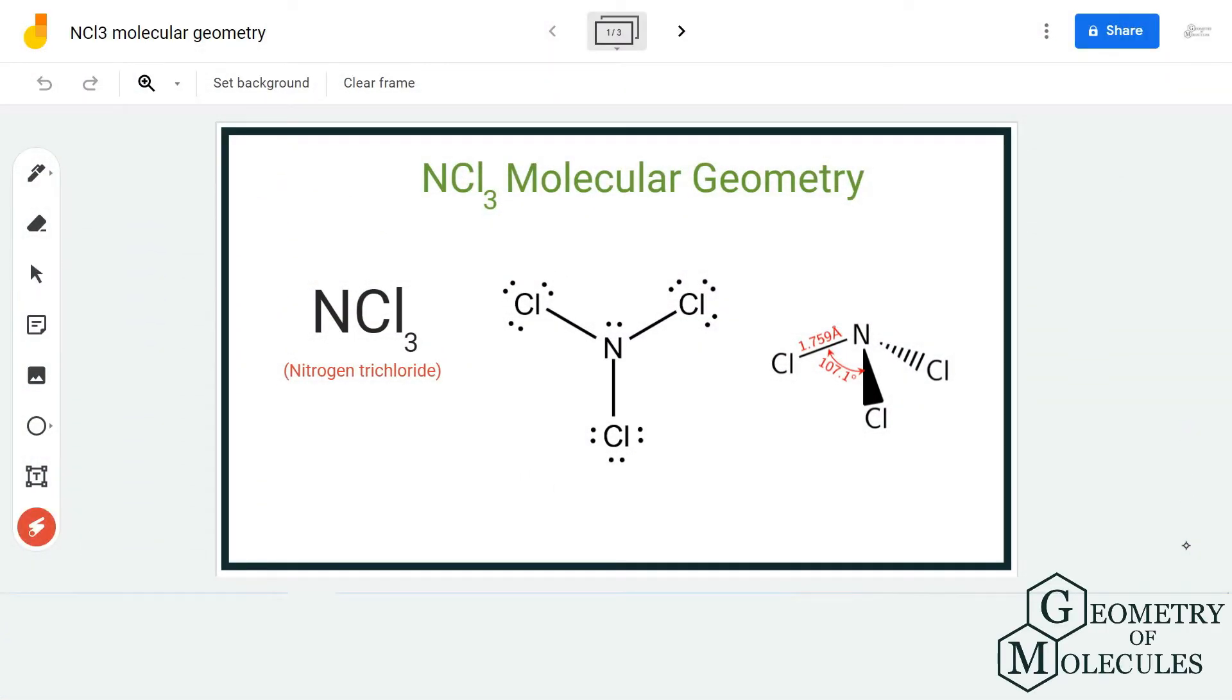Hi guys, welcome back to our channel. In today's video, we are going to help you determine the molecular geometry for NCl3 molecule. It's the chemical formula for nitrogen trichloride. To determine its molecular geometry, we are first going to look at its Lewis structure.